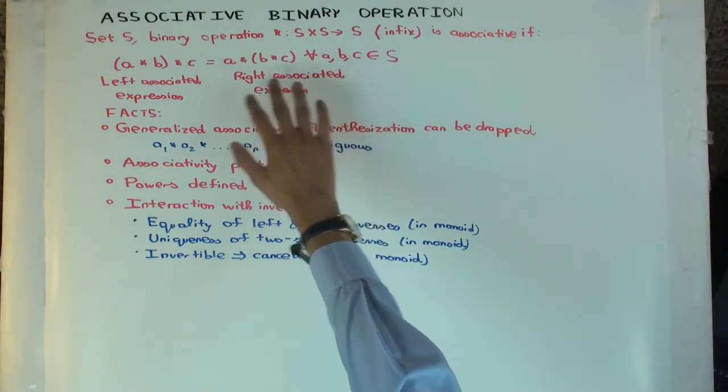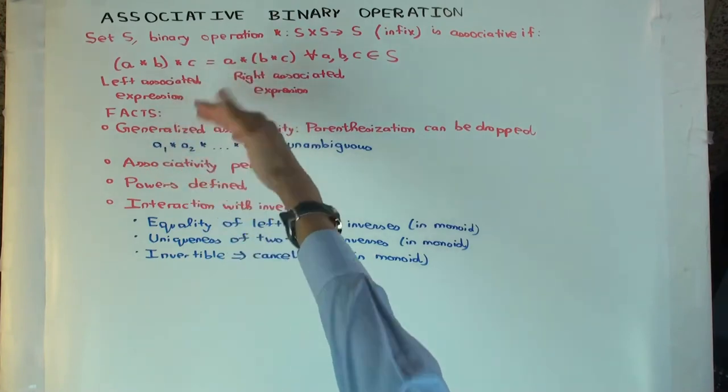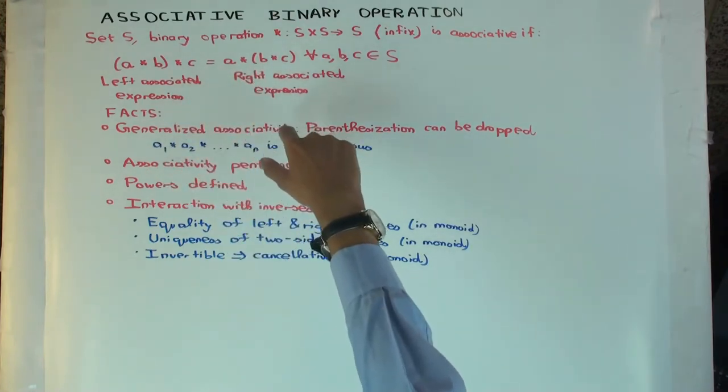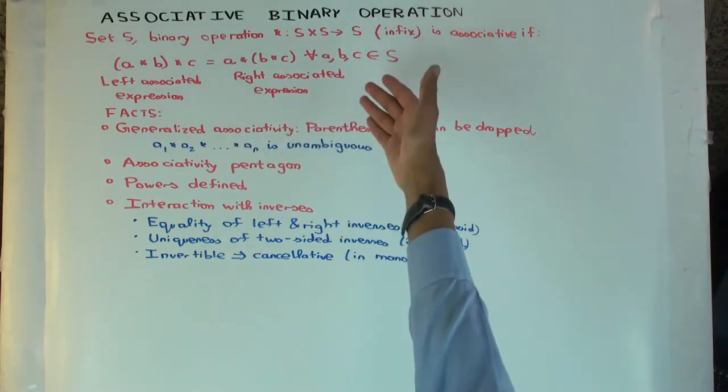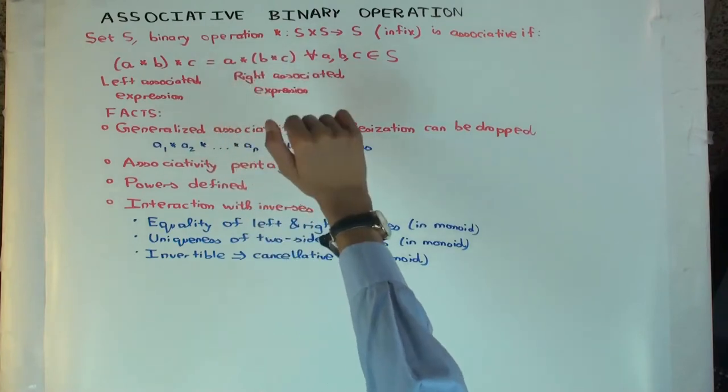And this has to be true. So if this is true for a particular A, B, and C, then we say that A, B, and C associate. But associativity, the binary operation is said to be associative if this is true for all A, B, and C.